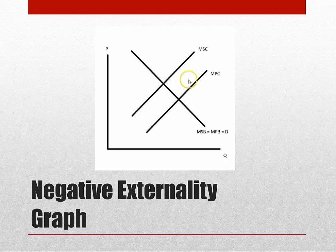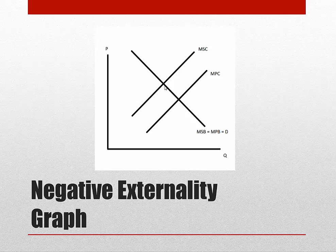This difference right here is the negative externality, and by taxing it, the government can move production to a lower level than it normally was, while the price becomes higher.